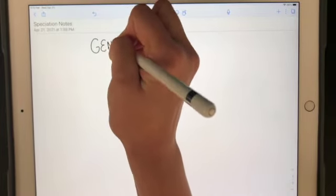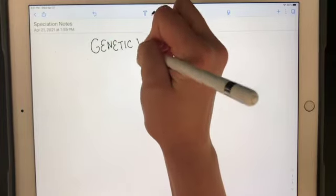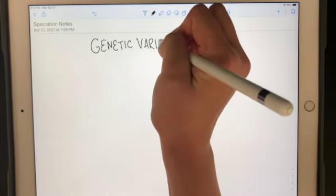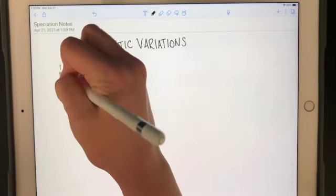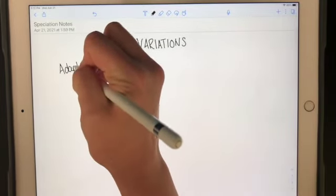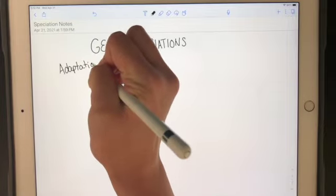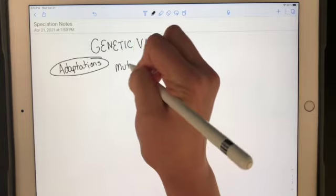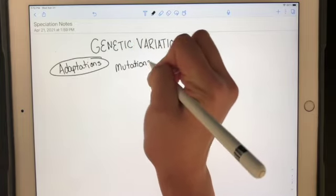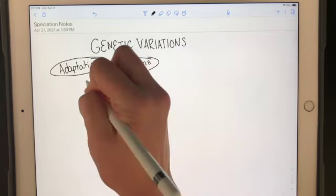So I want you guys to think of this as a factory where we have our genetic variations, and this could be in the form of adaptations, mutations, gene flow.